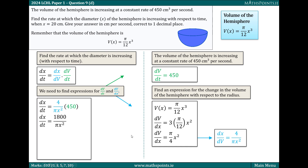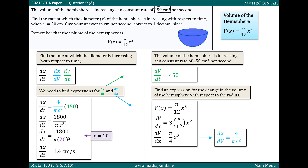Putting it all back together, the rate of change of the diameter with respect to time is 1800 over π x squared. We're looking for the rate when the diameter is 20, so substituting that in, the rate of change is 1.4 centimeters per second. The volume is constantly changing by 450 centimeters cubed per second, but the diameter changes by differing amounts. At the specific point in time when x equals 20, the diameter is changing by 1.4 centimeters per second.